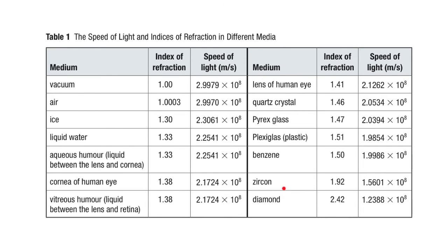Zircon is interesting — you might have heard of cubic zirconium, which is used in jewelry, and diamond as well. You'll notice those have very slow speeds of light. The reason is that the bigger the difference in speed of light from the vacuum, the more light bends. The bending of light is what makes diamonds and cubic zirconium sparkle, because the light is bent all around the inside.